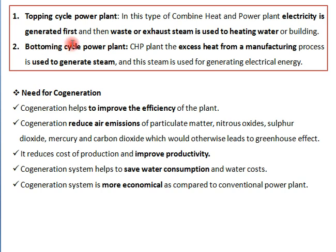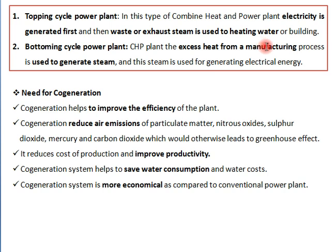In the bottoming cycle, excess heat from the manufacturing process is used to generate steam. The heat used inside manufacturing processes — the excess amount produced — is used to generate steam, which is then used to generate electricity. The main purpose here is to use heat in the manufacturing process; the remaining excess heat generates electricity as a secondary output.